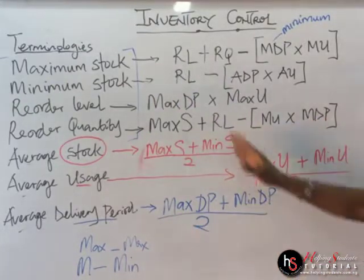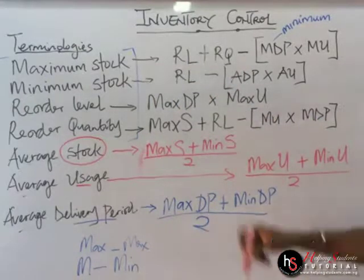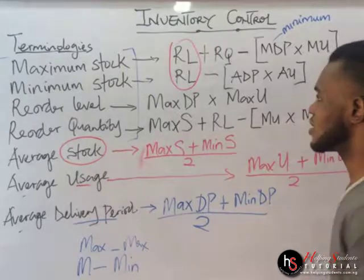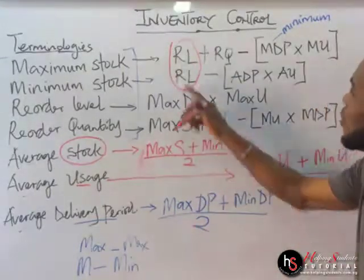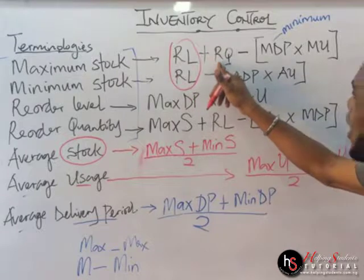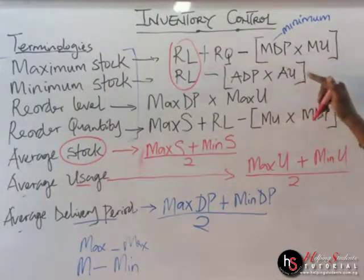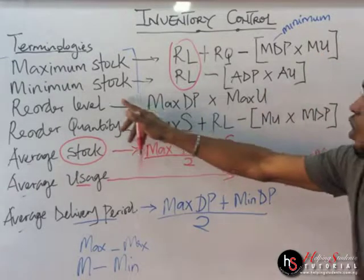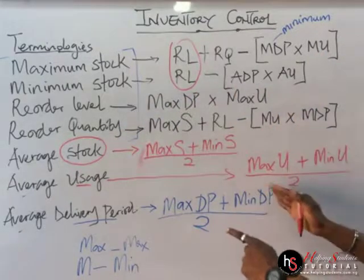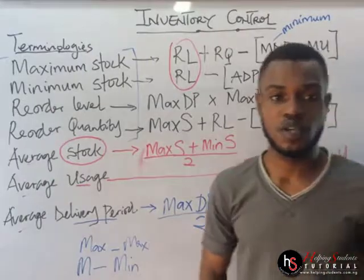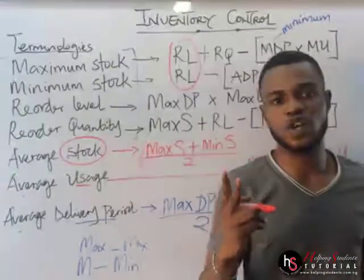Take your time and follow along — you can see the similarities in the formulas. For reorder level, you have: reorder level plus reorder quantity minus (minimum delivery period × minimum usage). Try as much as you can to understand this concept, and note the similarities across the formulas.